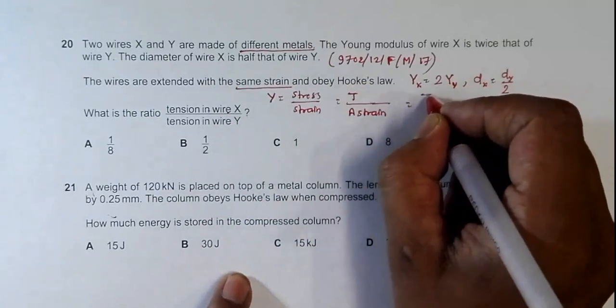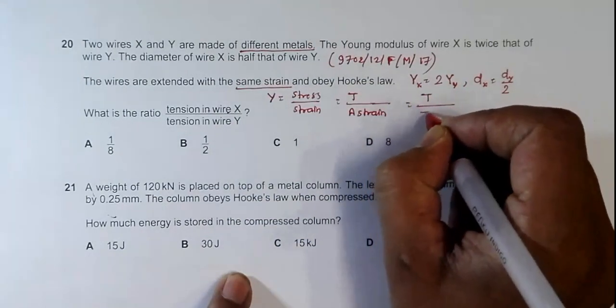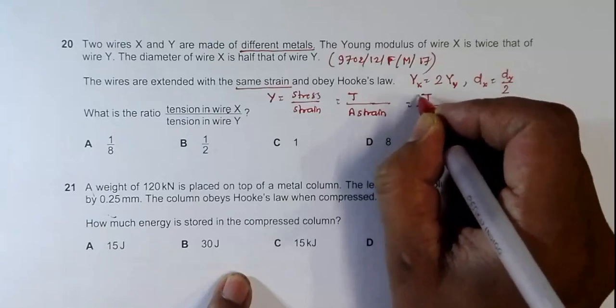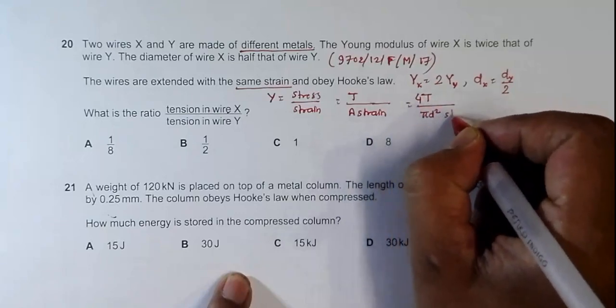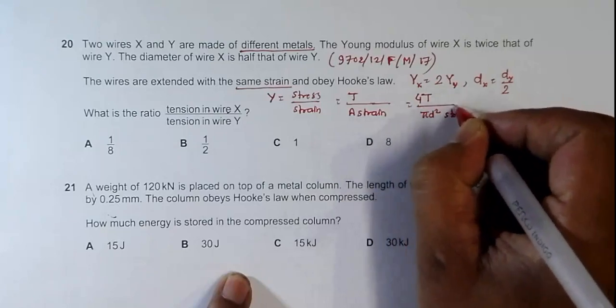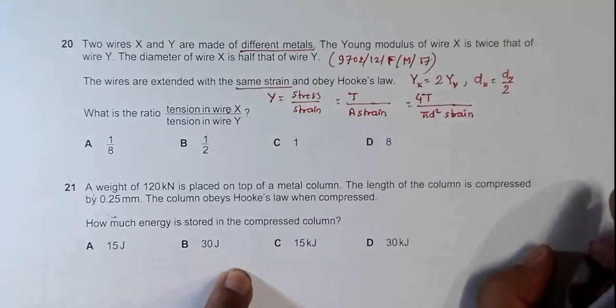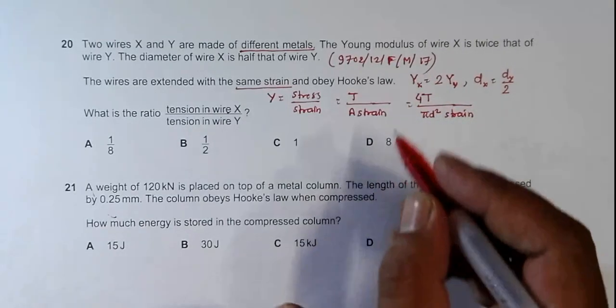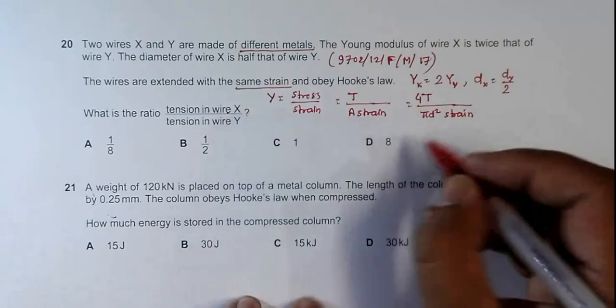It equals tension T divided by pi D squared over 4, then multiplied by strain. Now let's get the expression for the tension for the ratio.